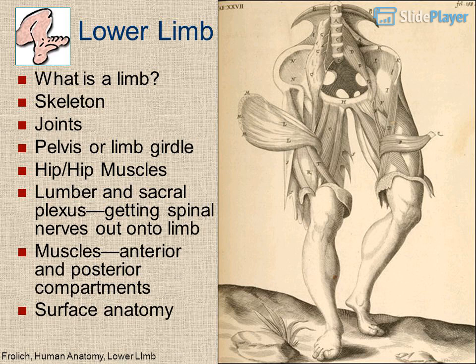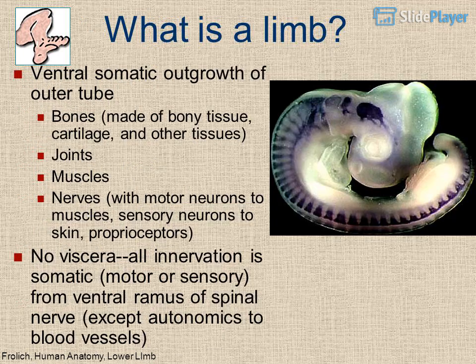The lower limb consists of a limb skeleton, joints, pelvis or limb girdle, hip muscles, and lumbar and sacral plexus. A limb is a ventral somatic outgrowth made of an outer tube of bones composed of bony tissue, cartilage, and other tissues, with joints, muscles, and nerves including motor neurons to muscles and sensory neurons to skin and proprioceptors. There is no viscera.